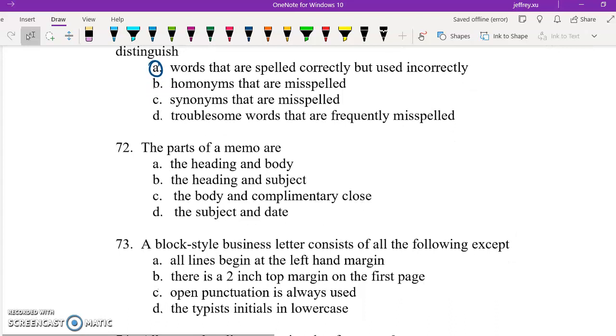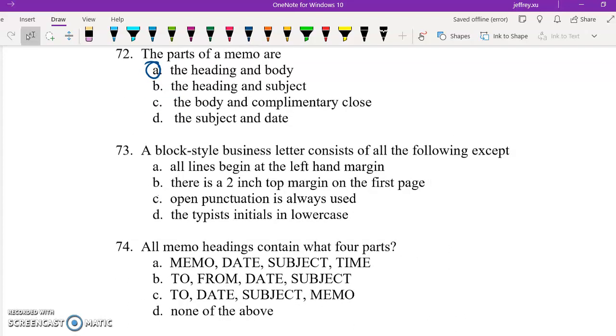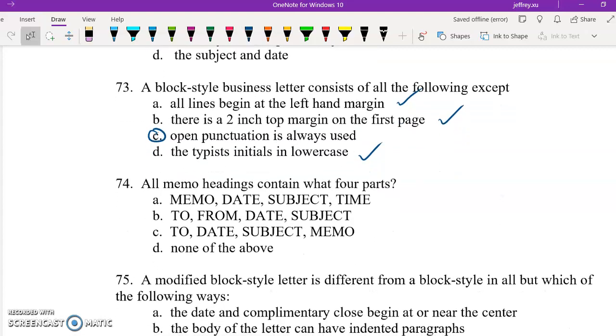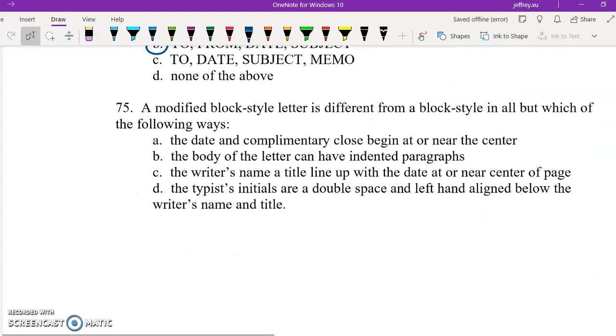The parts of a memo are the heading and the body. A block style business letter consists of all the following except all lines begin at the left hand margin. That's correct. There is a two inch top margin on the first page. That's correct. The typist initials are in lowercase. That's correct as well. Open punctuation is not used because you use closed punctuation. So think about like your colons, your commas, stuff like that. So that's what you use in a block style business letter. So C is correct. All memo headings contain what four parts? They must contain to, from, date, and subject. A modified block style letter is different from a block style letter because the typist initials are a double space and left hand aligned below the writer's name and title. So that's just something you have to know.